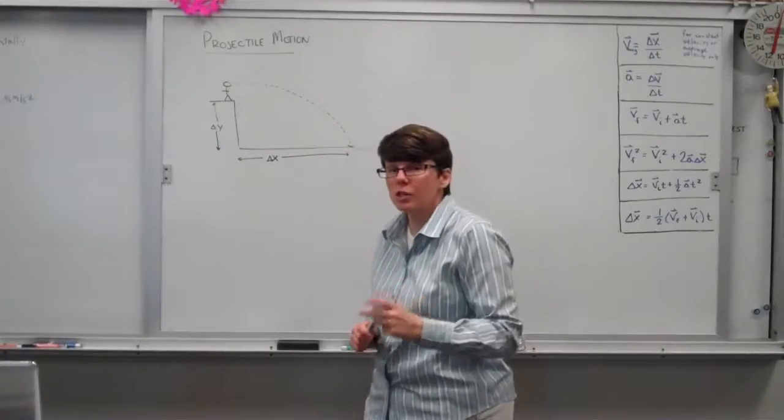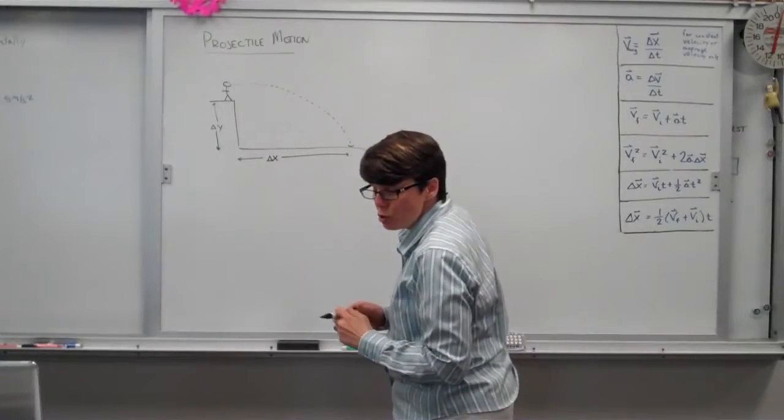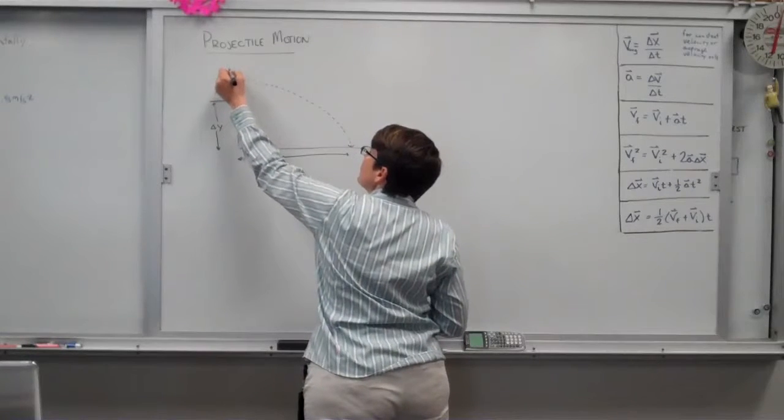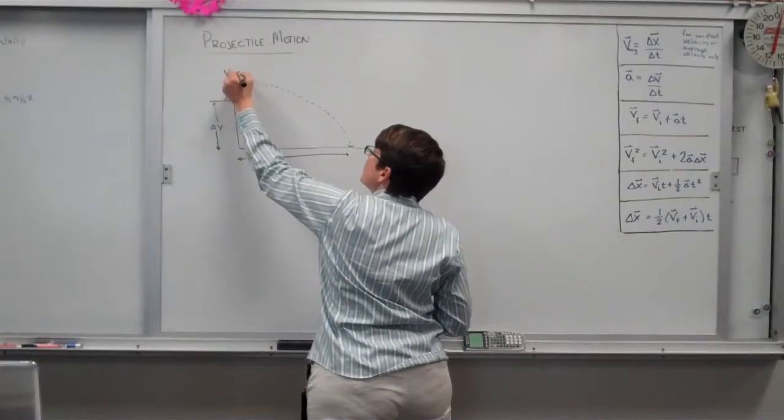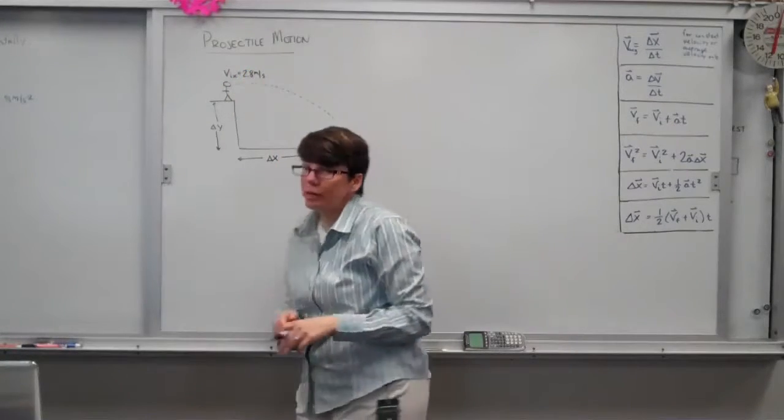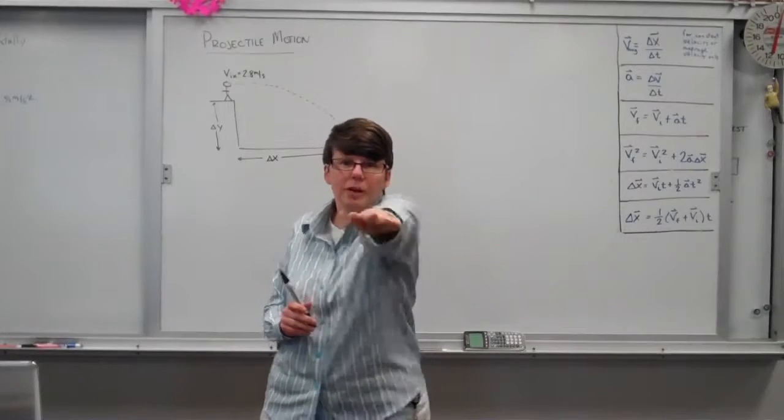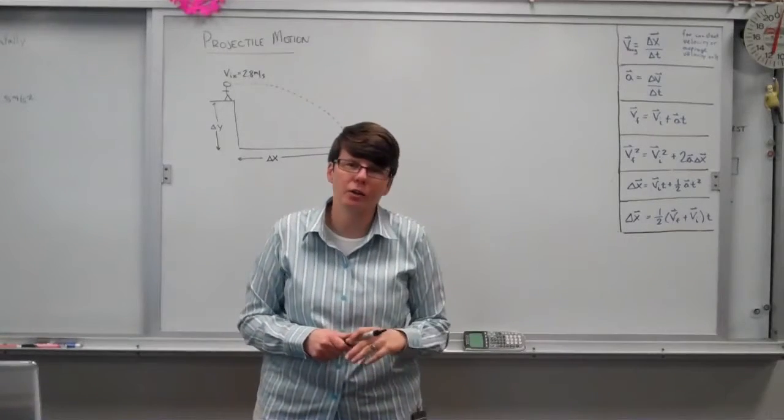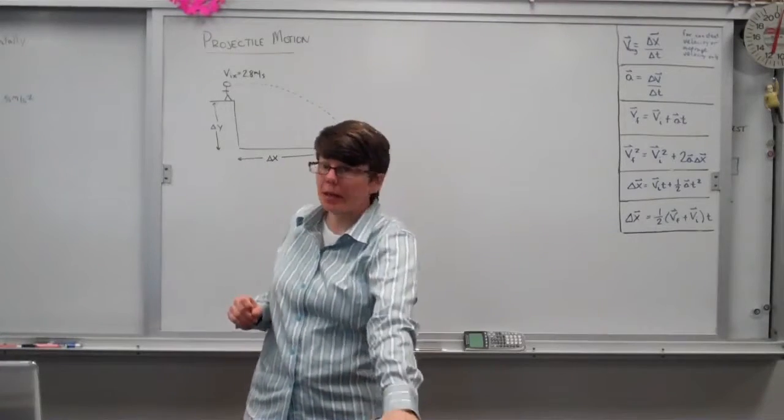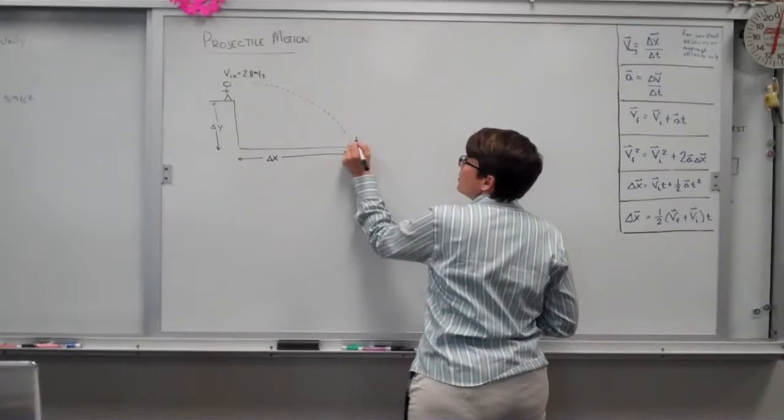We're provided with two bits of information. Number one, you leave the platform with a velocity of 2.8 meters per second. Now what I know about that velocity is that it's horizontal because when I run off the platform, I'm going to be running horizontally. Think like Wile E. Coyote. When he runs off the cliff before he looks down, he's running out sideways, not up and down. I strike the water 2.6 seconds later.